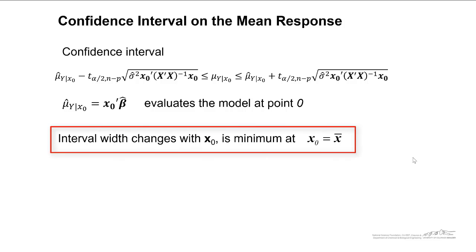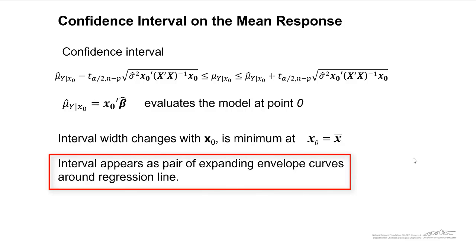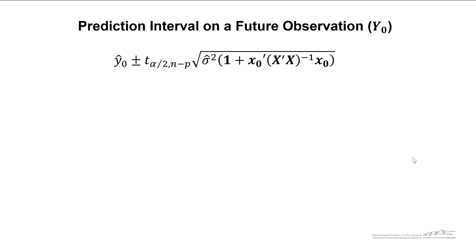The interval width changes with x naught. Its minimum at x naught equals the average. And again, remember that these are vectors we're talking about. The interval appears as a pair of expanding envelope curves around the regression line.